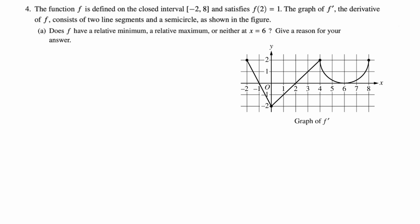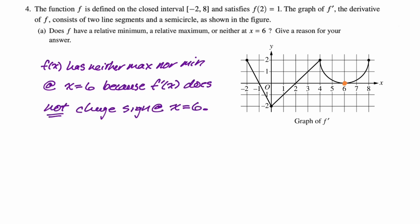First question, does f have a relative minimum, relative maximum, or neither at x equals six? Give a reason for your answer. So let's first locate six on this graph. Six is a zero of the first derivative, but the first derivative does not have a sign change there, so it is neither a maximum nor a minimum. I think that's all we need to say. So f of x has neither max nor min at x equals six because f prime does not change sign at x equals six.